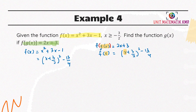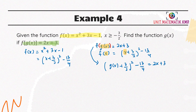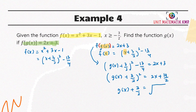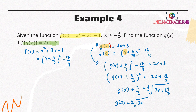Let's look at the calculation: (g(x) plus 3 over 2) squared minus 13 over 4 equals 2x plus 3. Simplifying, we get (g(x) plus 3 over 2) squared equals 2x plus 19 over 2. Taking the square root, g(x) plus 3 over 2 equals plus or minus the square root of (2x plus 19 over 2).